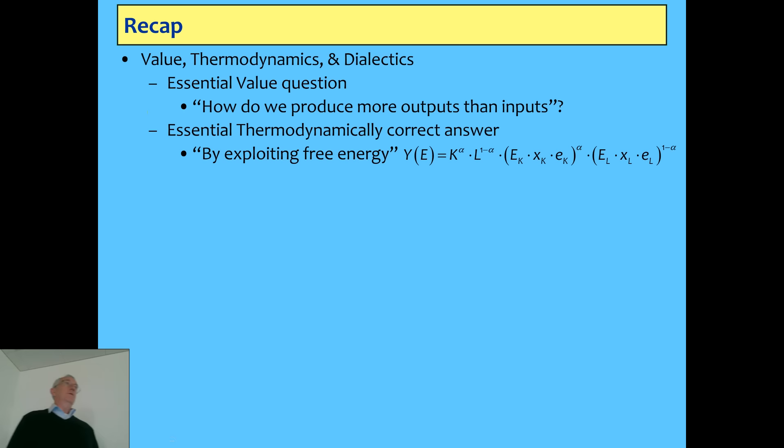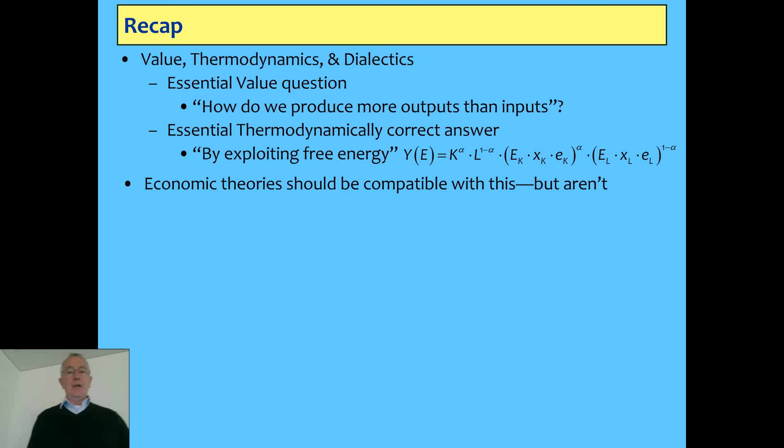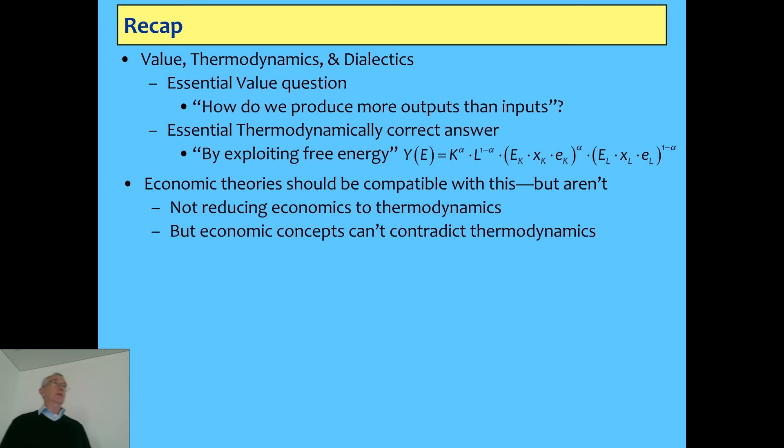If you don't have any energy input, you don't get any output. Eliminate one or the other variable — reduce the energy output to zero — and you also reduce the output contribution to zero, because the coefficients alpha and one-minus-alpha are applied to the energy inputs as well as to labor and capital. That's going to be pretty important today as well. That's what our economic theories should be compatible with.